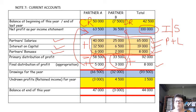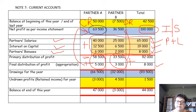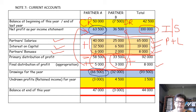Drawings means money the partner took during this year. The partner is not supposed to take more than what his share of profit is. As you can see, Partner A's share of the profit is 63,500 rand — that means he took more money than what he was supposed to take, so he actually owes the partnership 3,000 rand. Partner B could have taken 36,500 rand; he took 32,000, so he still has 4,500 rand left of this year's profit that he can withdraw.